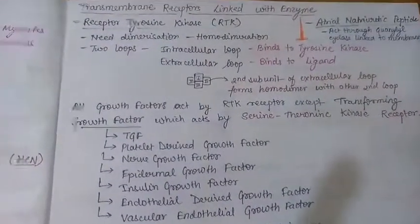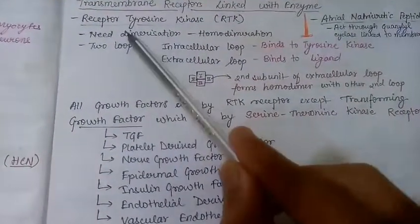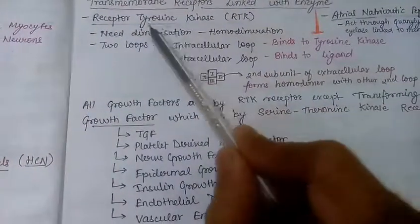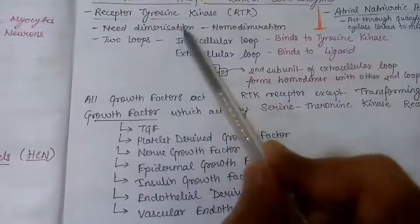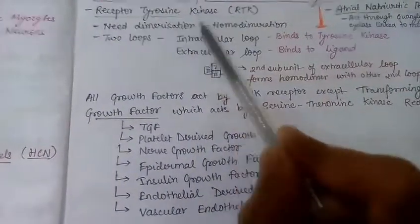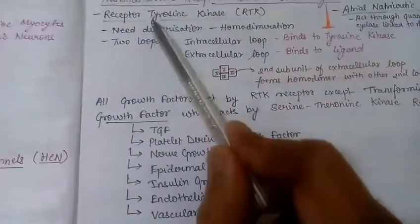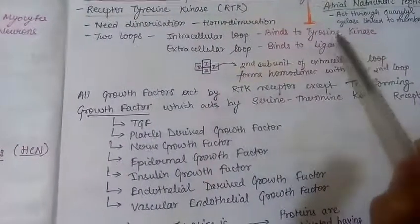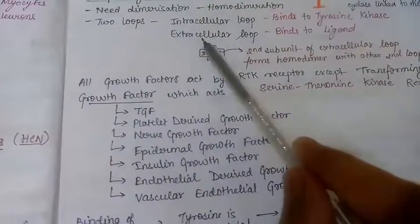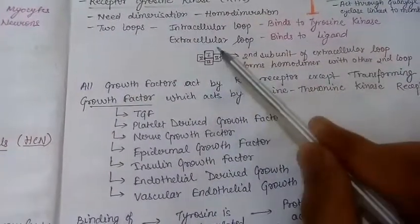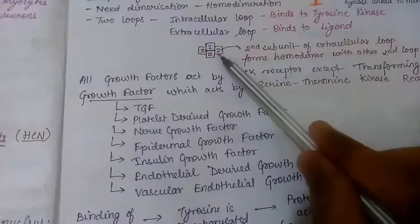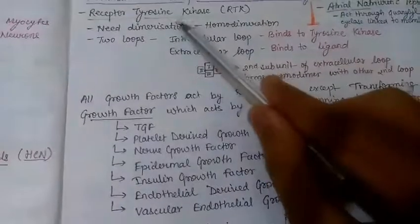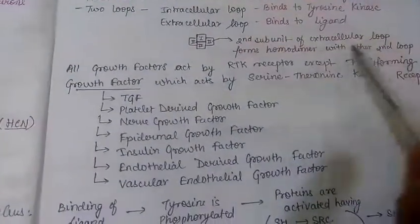Now we are moving to transmembrane receptors linked with enzymes. The first is receptor tyrosine kinase (RTK) — an example of a transmembrane receptor linked with an enzyme. RTK also needs dimerization (homodimerization) to function. It has two loops: an intracellular loop with tyrosine kinase activity, and an extracellular loop that binds the ligand. The second subunit of the extracellular loop forms a homodimer with the adjacent extracellular loop of another RTK.